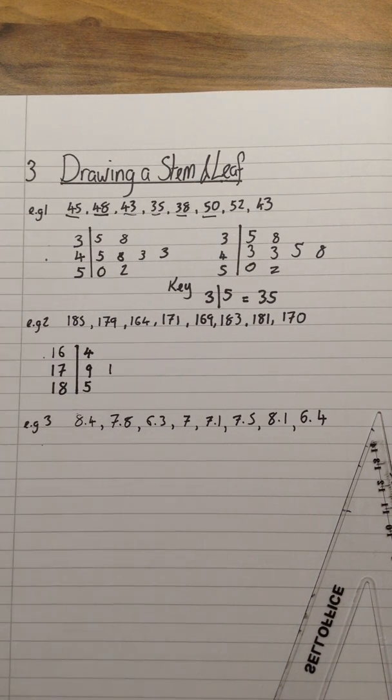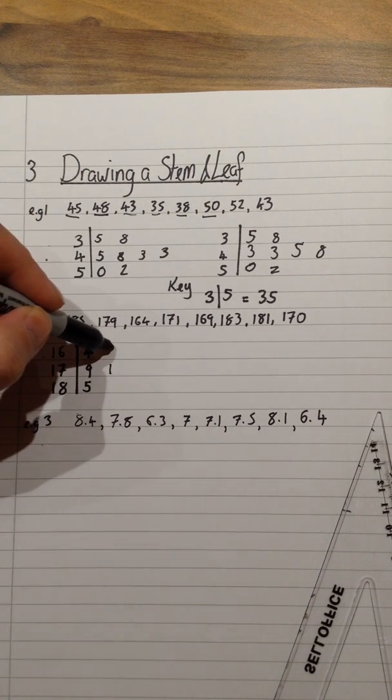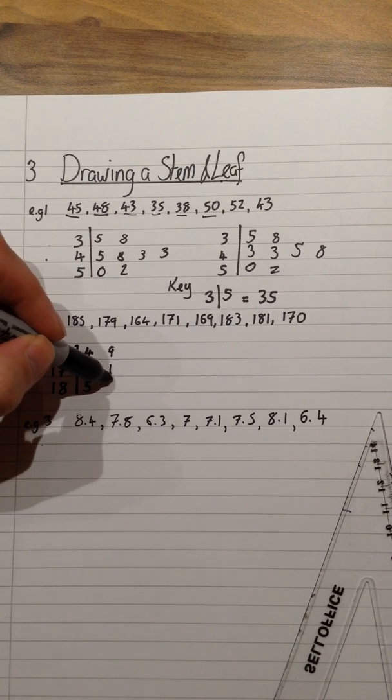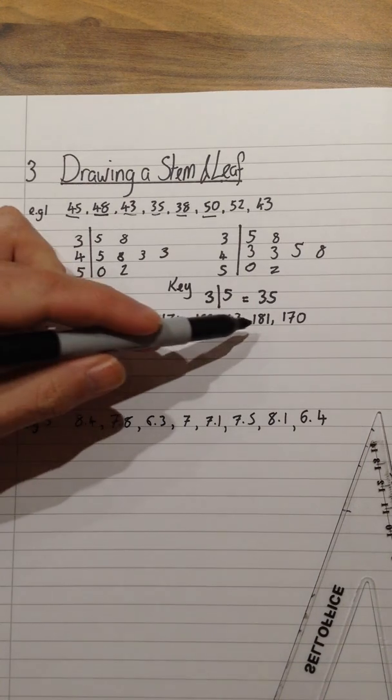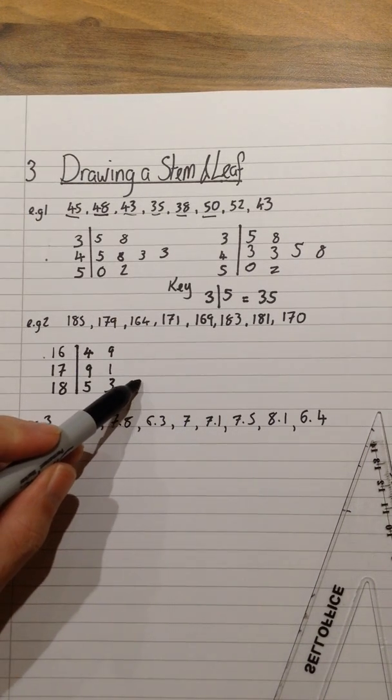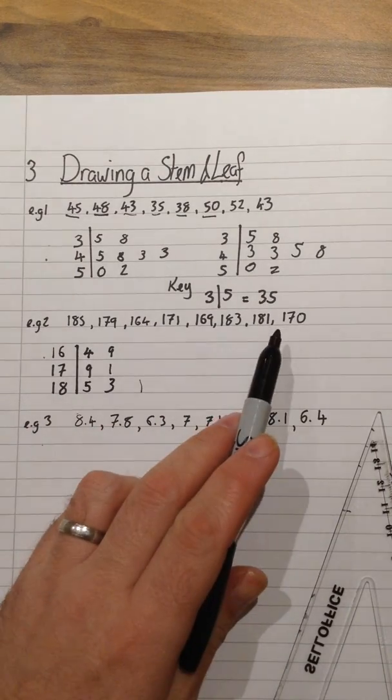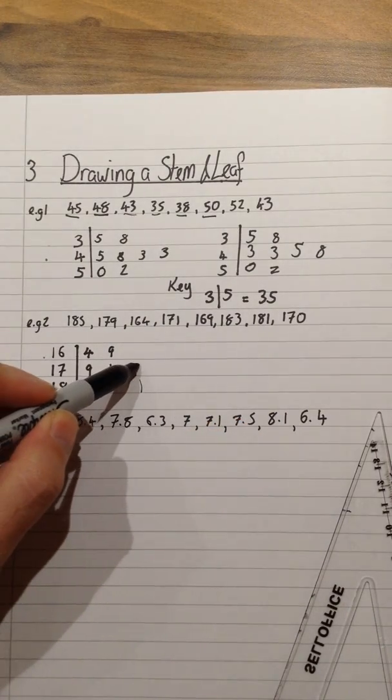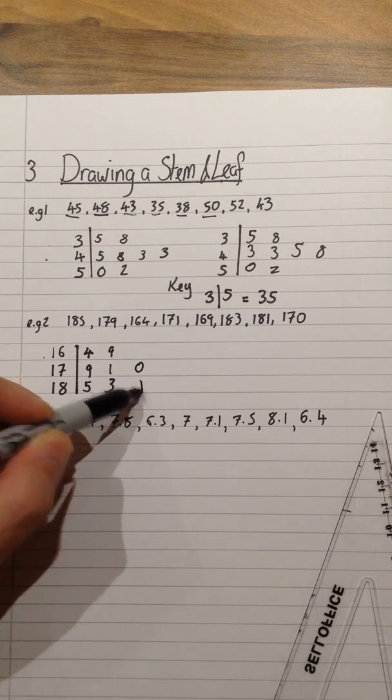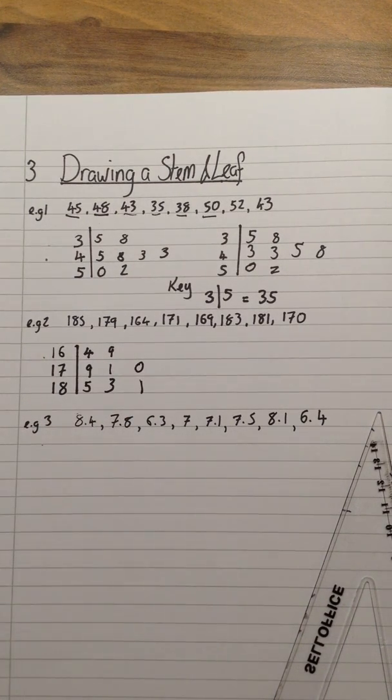Make sure you leave a little gap so you don't start getting the numbers mixed up. 169 goes on the top row. 183. Then we've got 181 again on the bottom row. And 170. Just remember zero is still relevant because I need to make sure that I've shown that 170 actually exists.